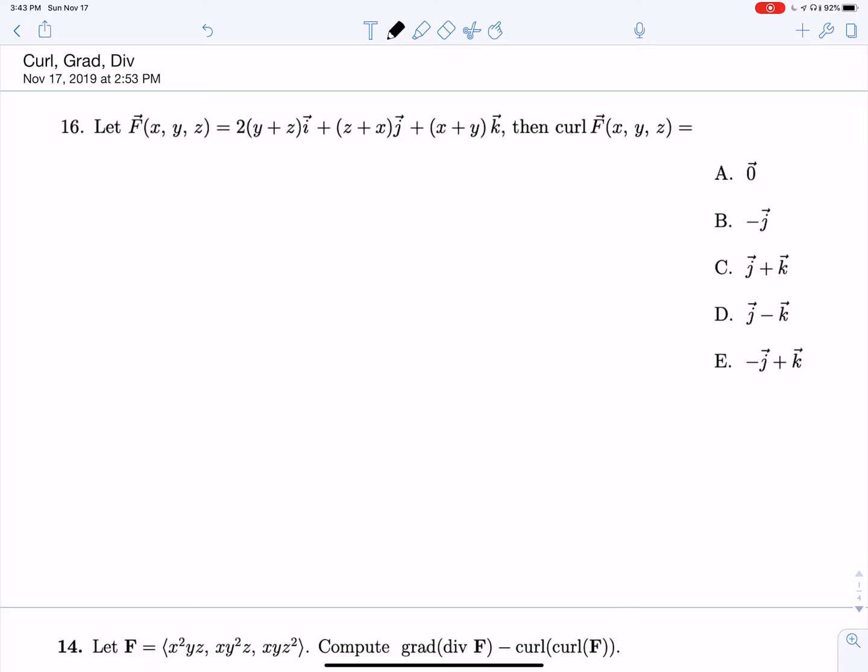We know that the curl of some vector field is going to be del cross F, where the del operator is partial partial x, partial partial y, partial partial z. And then we know that the divergence of a vector field F is del dot F.